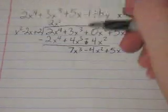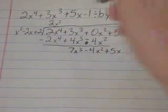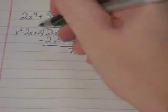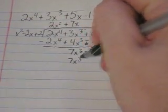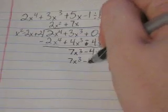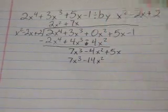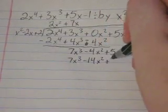So now you have to ask 7x cubed divided by x squared. That will leave you with 7x. Multiply that back down. You get 7x cubed minus 14x squared and then plus 14x.